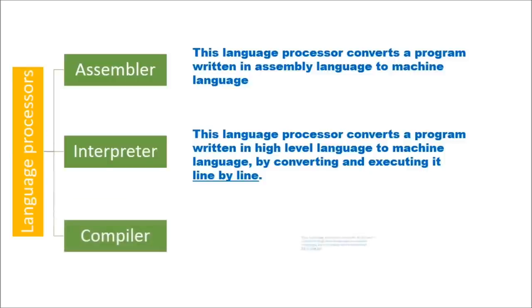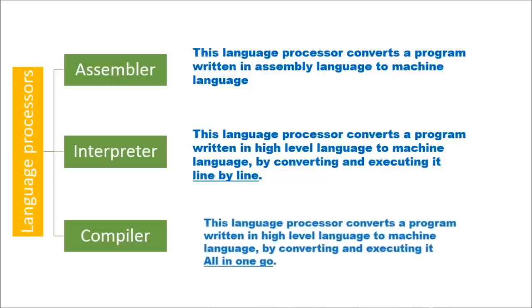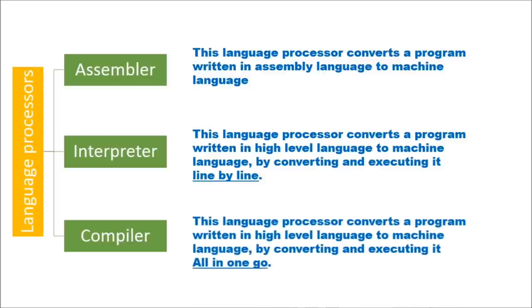Compiler: This language processor converts a program written in high level language to machine language by converting and executing it all in one go. This is the basic difference between interpreter and compiler: that interpreter converts the program line by line and compiler converts the program all in one go.